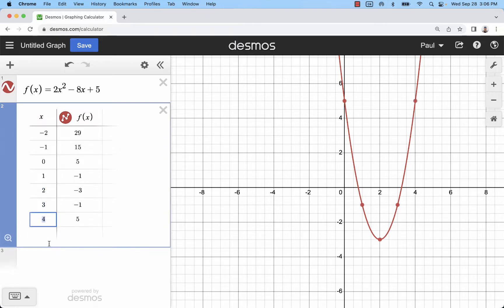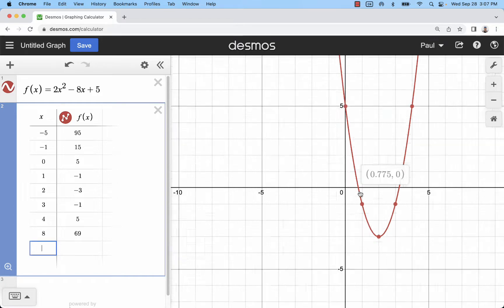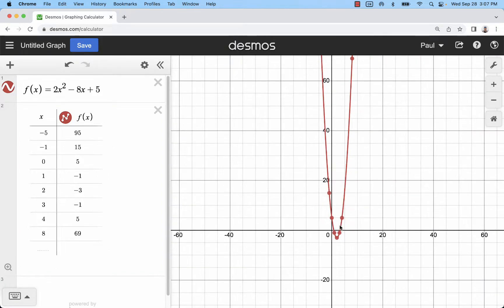Or we can delete all those and pick numbers we want. So let's say I want -5, -1, 0, 1, 2, 3, 4, and go out a few to 8. So now I have a bunch of points plotted there on the graph. And if I zoom out, I can see where those were plotted.